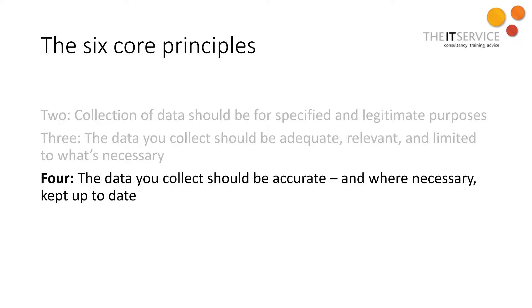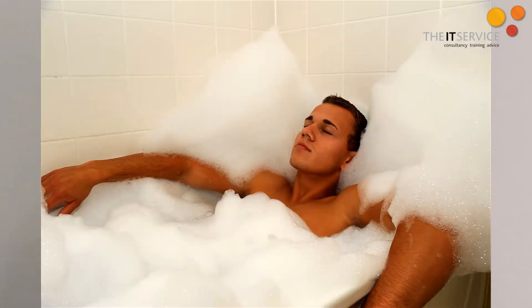The fourth principle says that the data you collect should be accurate, and where necessary, kept up to date. That makes pure business sense, of course. If it's not up to date, why are you holding the data? If you've got a list of customers and their email addresses are incorrect, good luck sending your invoice to them. But if you're only keeping my details because the law requires that you archive transaction data for seven years for accounting purposes, you've no need to email me each month to check that that archived data is up to date.